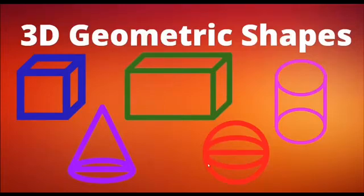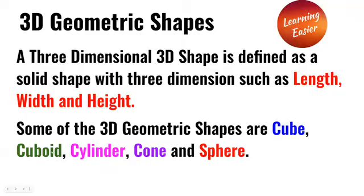Welcome to Learning Easier. Today we're going to learn about 3D geometric shapes. A three-dimensional shape, or 3D, is defined as a solid shape with three dimensions such as length, width, and height.